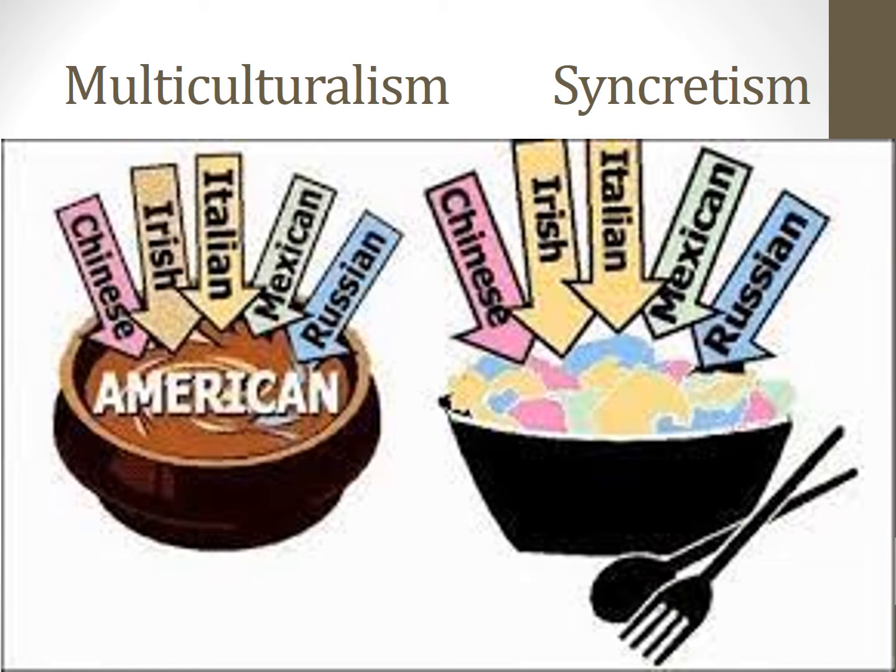In a salad, we see all of the ingredients mixing together, complementing each other, but never entirely dissolving. For example, the border region between the United States and Mexico illustrates cultural traits from both cultures. In communities like El Paso, Texas, people may be fluent in both English and Spanish, and have cultural ties to both Mexico and the United States.